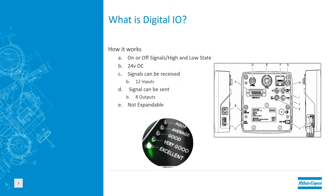So how does digital I/O work? Basically, digital I/O sends an on or off signal, or a high and low state. This is provided through 24 volts DC. There are up to 12 input signals that can be received on the MTF-6000, and it also can send out a maximum of eight outputs. These are not expandable. How to wire these can be found in the configuration manual for the MTF-6000 or in the ToolsTalk MT manual.